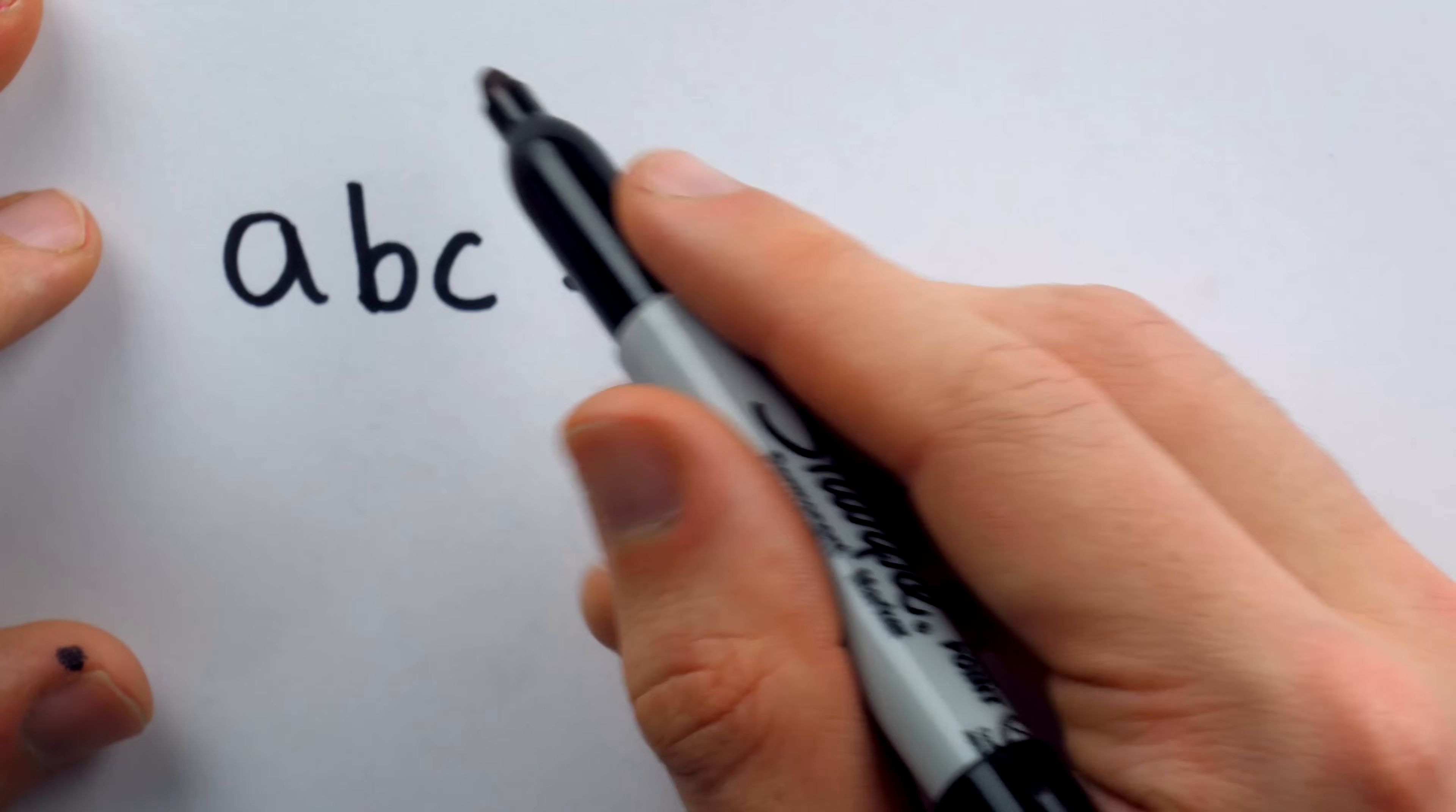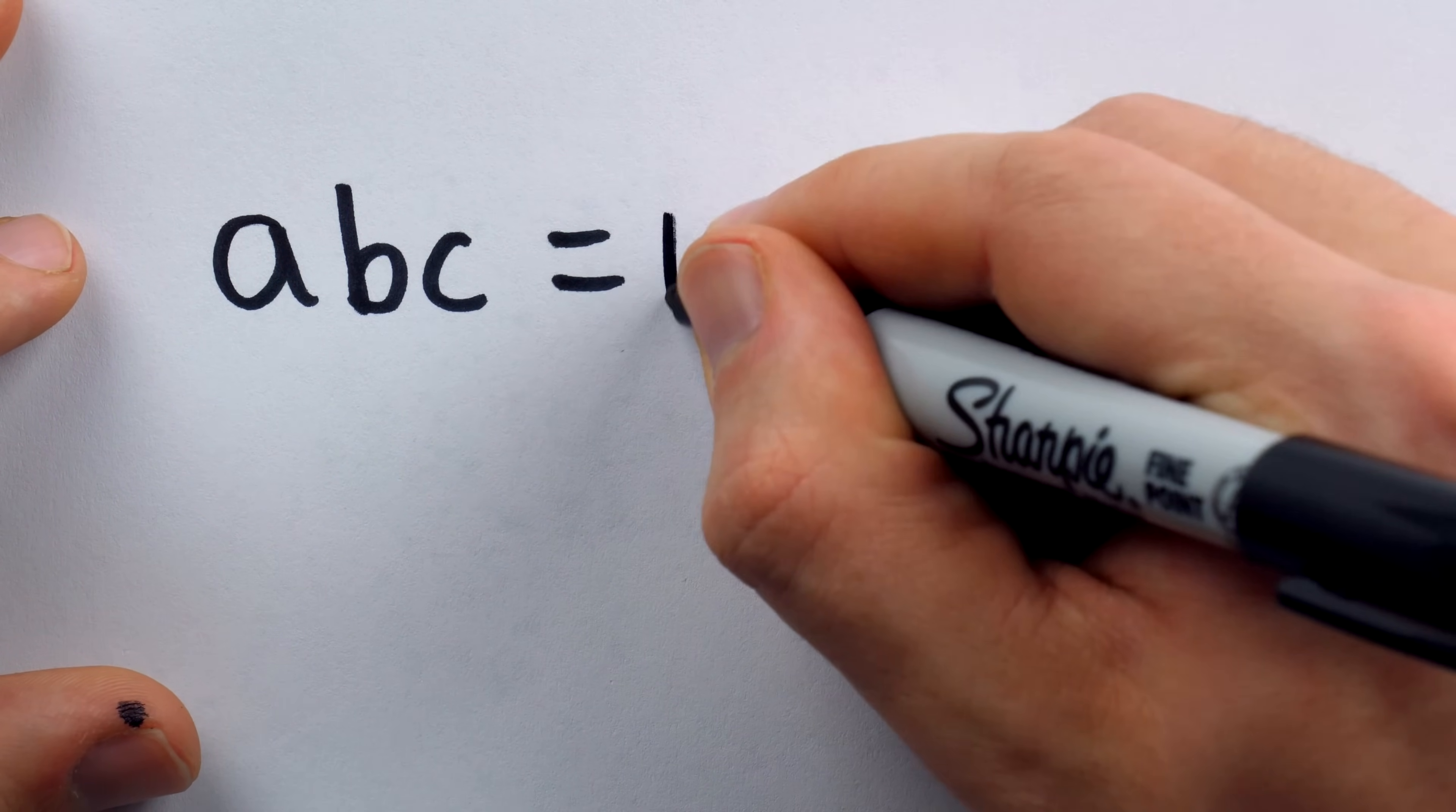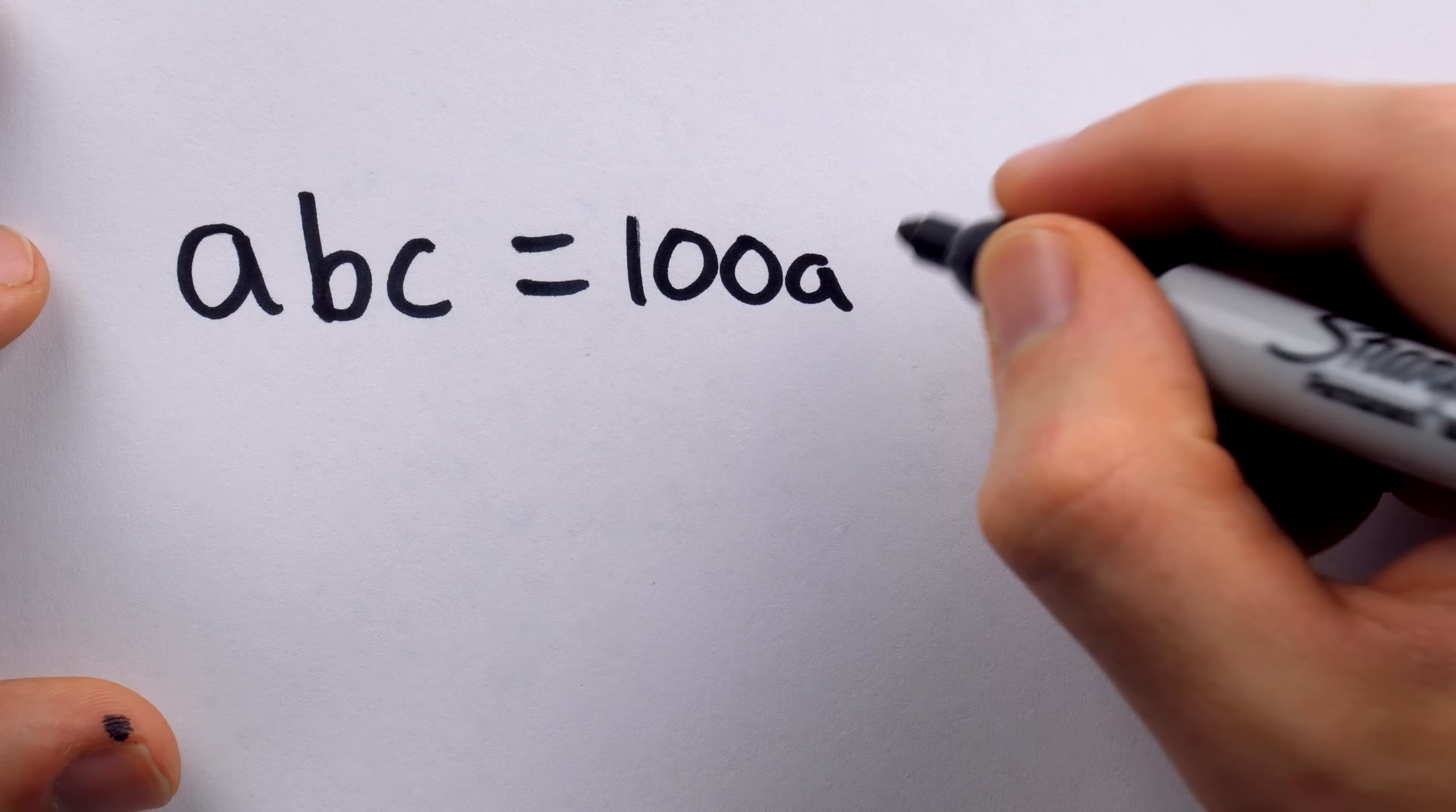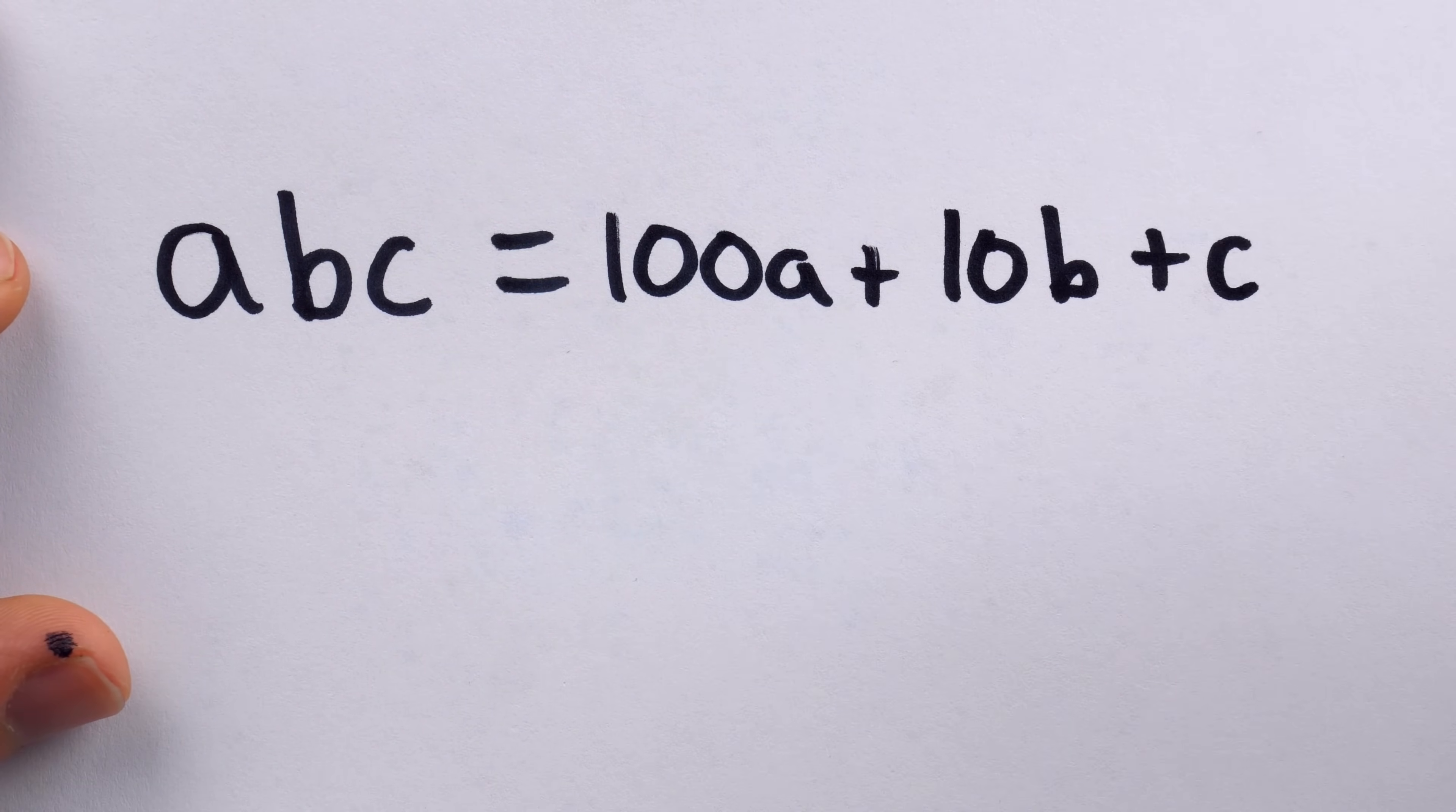what this represents, if we were to write it in expanded form, is C plus 10B plus 100A, right? We're just understanding the place value system. A is counting the number of 100s, B is counting the 10s, and C is counting the 1s.